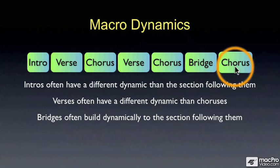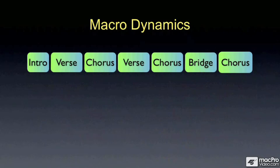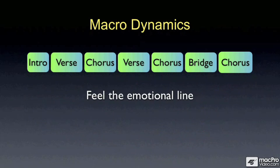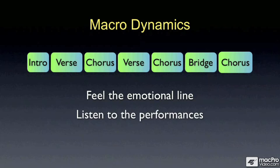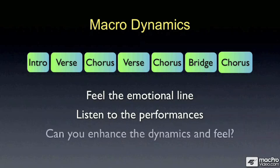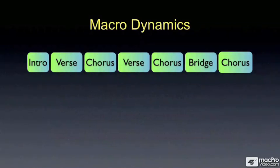These are things we can control via macro-dynamics. So if you're going to master a song, you have to understand that song's emotional line — where are the climaxes, what are we building to, what's it about, and what can I do with the macro-dynamics to reinforce that? These are questions you really have to ask yourself. You have to listen to the performances, know when people are playing loud and when they're playing soft, and most importantly ask yourself: can I enhance the dynamics and feel of this song? You can't do that unless you really listen to the song and get it.